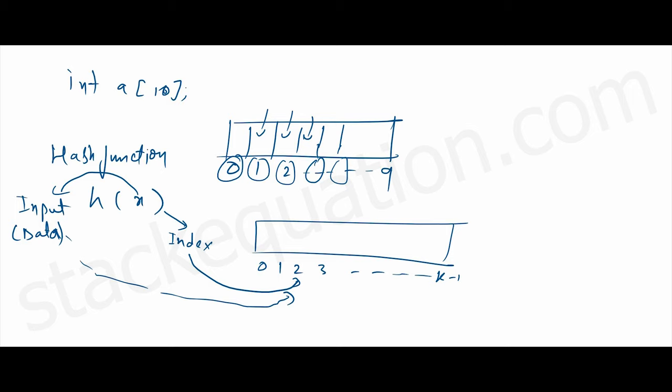Unlike an array or direct access table, we don't store the data serially in a hash table. We use a hash function and input the data, it takes data as the input and returns the index where we store the data.